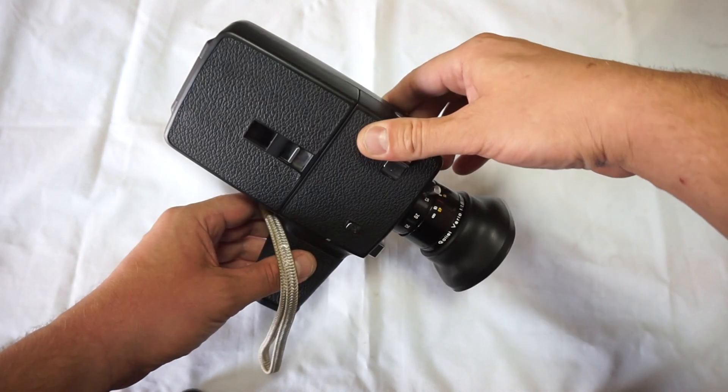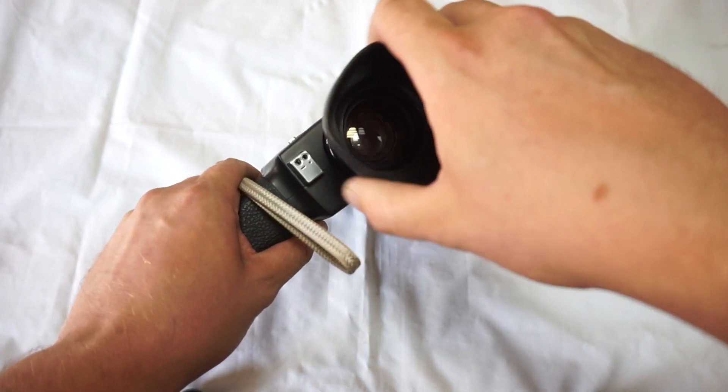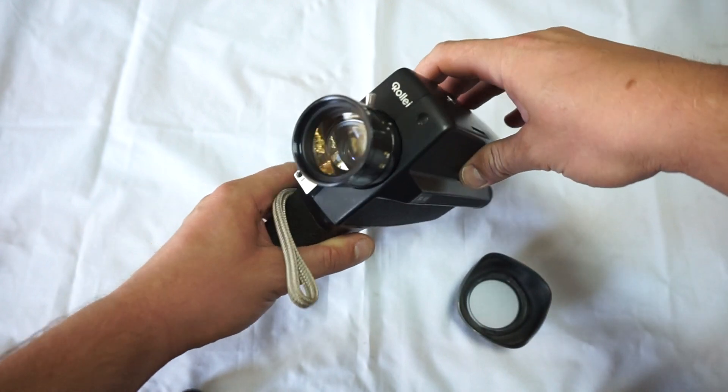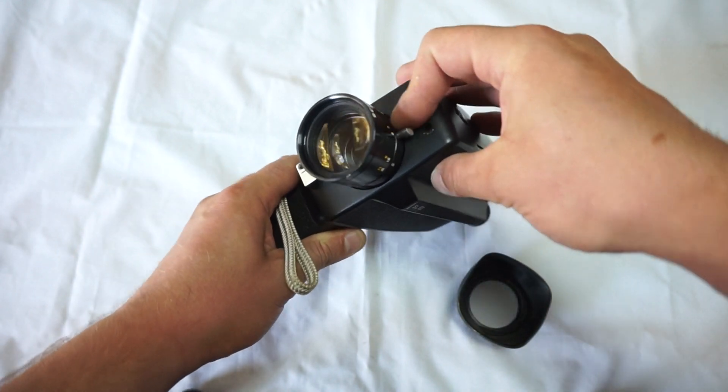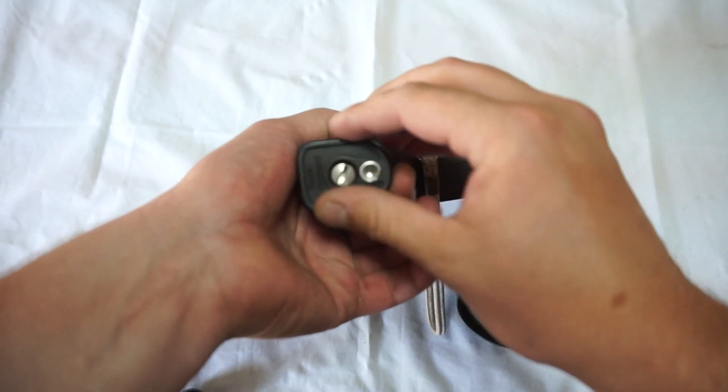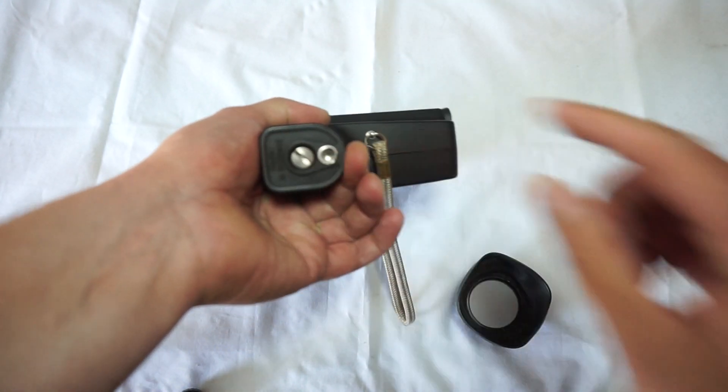So we have here a Relay SL82 in very good condition with a sunshade that comes together. Clean lens, manual zoom works well. The battery compartment is in the handle, so you need to open it.